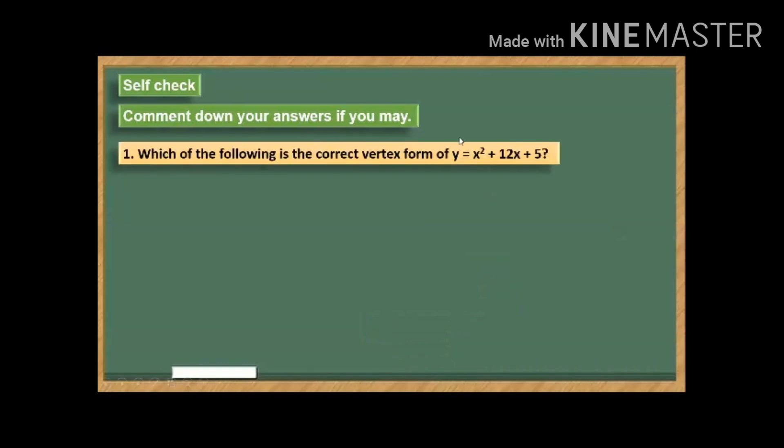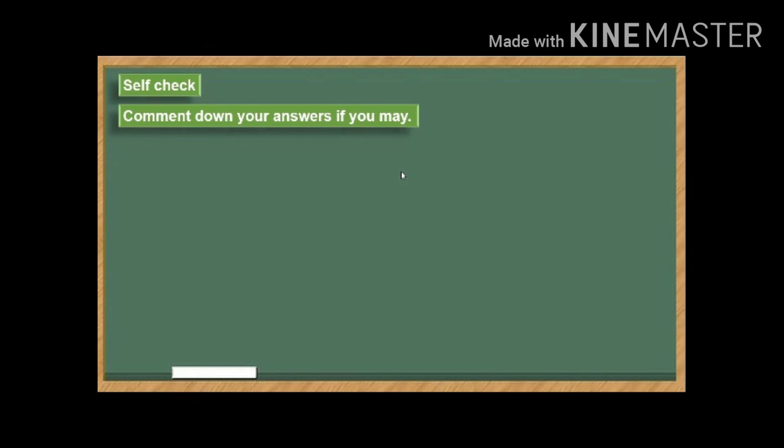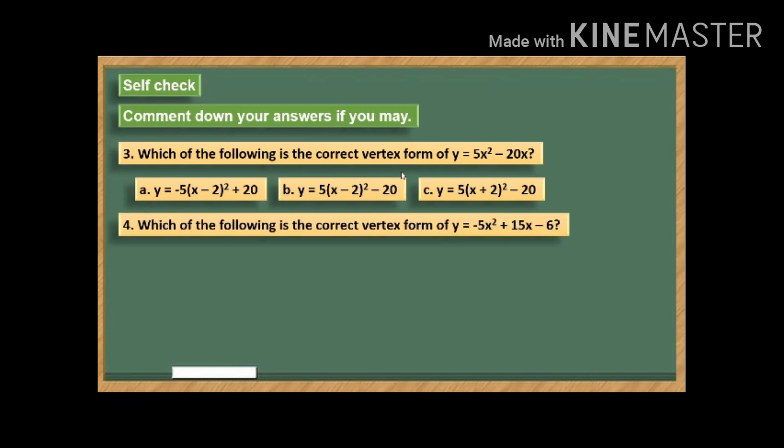Number 1, we have here the problem and the choices. Number 2, we have the problem and, of course, the choices. And, of course, we have number 3 and the choices. And, number 4, we have the corresponding choices.